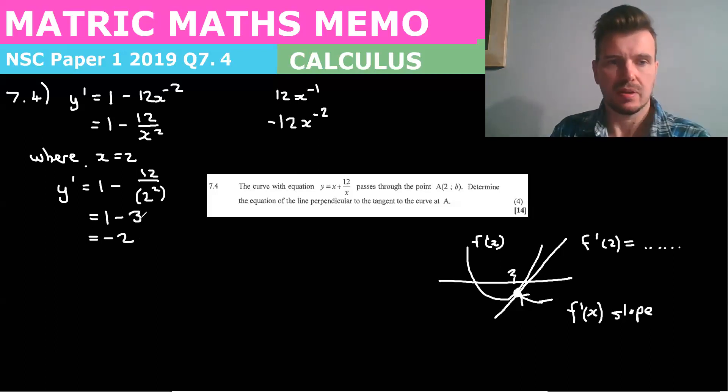But now they want the line perpendicular to the tangent. So therefore, the line perpendicular to the tangent is the reciprocal.